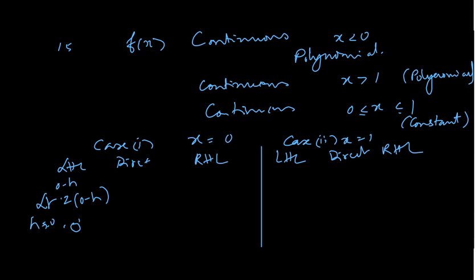We have to take the second piece. It is already 0. RHL means 0 plus h — anything greater than 0. For this, you have to use f(x) = 0, the second piece. Therefore, 0. Since LHL equals 0, direct equals 0, it is continuous.